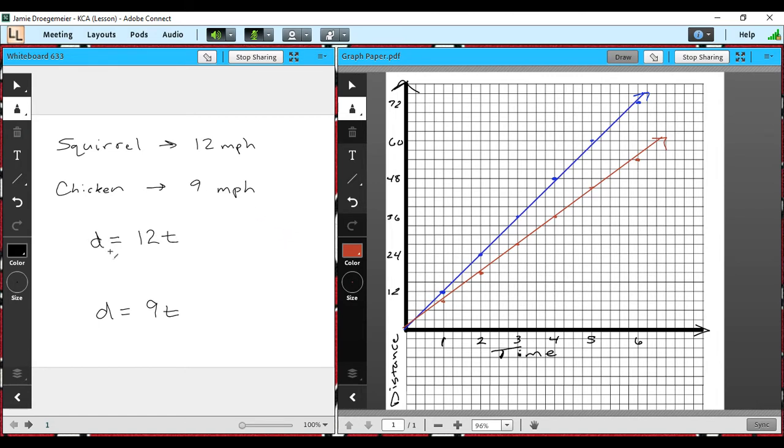The squirrel's equation would be the distance equals 12 times the number of hours or times time. And then for the chicken, D would equal nine times the time. So basically for every hour, the squirrel runs 12 miles. For every hour, the chicken runs nine miles.